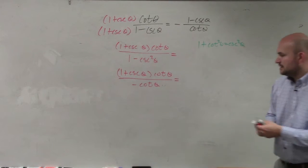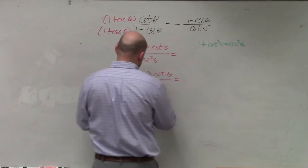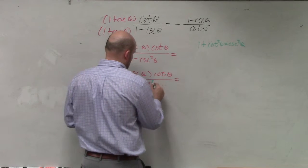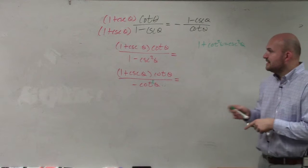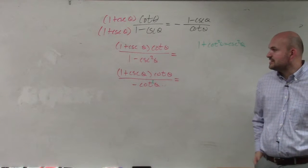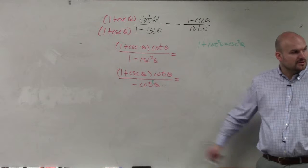So now, cotangent squared. So now, you guys can see that it's one plus cosecant of theta times cotangent theta divided by negative cotangent squared.